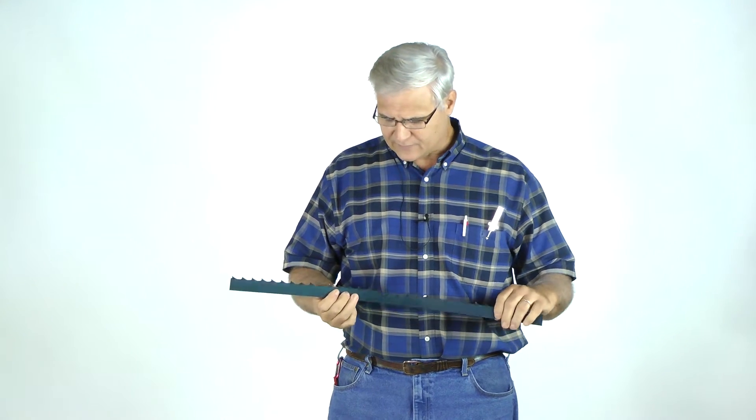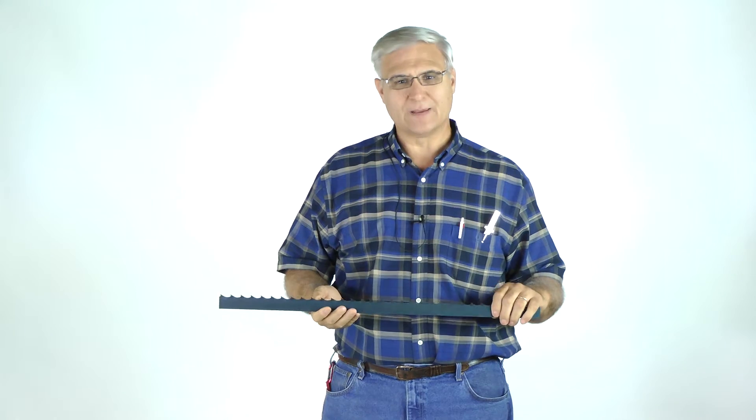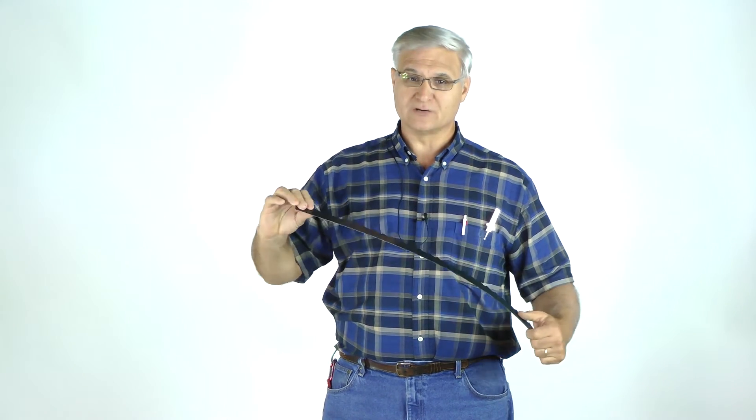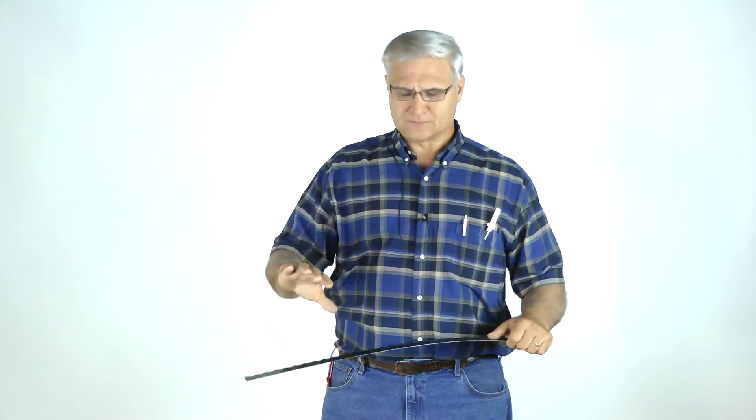It's made of a spring steel, and there's different numbers and names for it that are proprietary with different manufacturers. But it is a steel that is flexible so that it can go around the bandsaw wheels. And the good thing about that is the same as a regular spring that you're familiar with, it has to spring back and come back straight. So that's the type of material that it's made of.